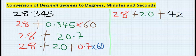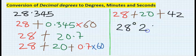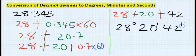In the last step, I will remove the concatenation characters. And my final result will be 28 degrees, 20 minutes, 42 seconds. This is our final result.